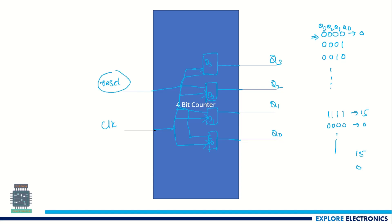The reset signal is required because suppose the counter is at position 1010, and in the next cycle we give reset equal to 1 — the output of the counter will come back to 0. So to reset the count output to 0, we require this reset signal. This reset signal is going to make all the outputs 0. Let us see how to design this counter and how we are going to provide D3, D2, D1, D0 inputs so that it behaves as a counter.